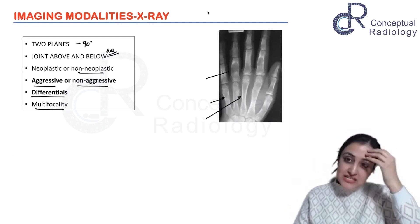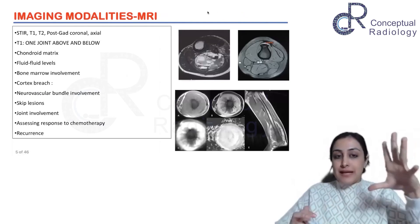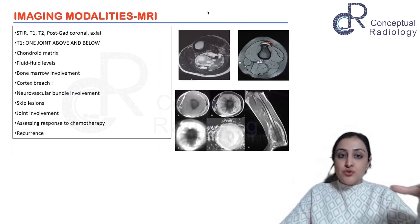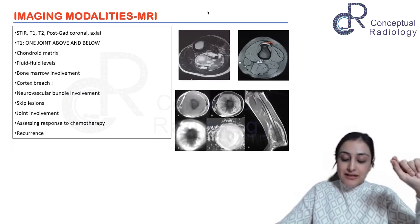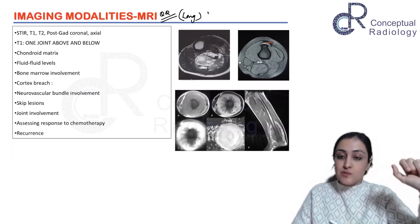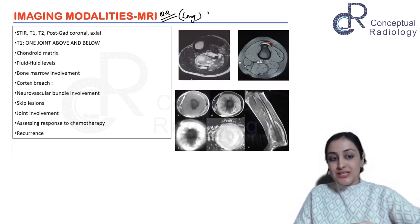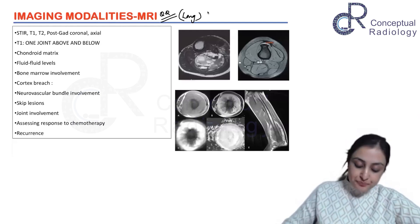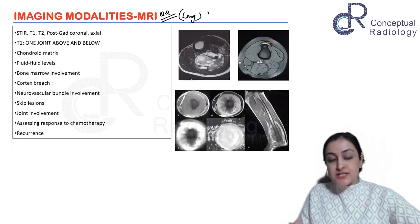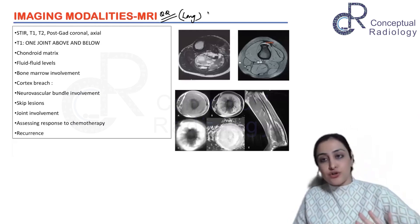MRI is the best investigation and is done in almost every aggressive lesion as a supplement. The role of MRI in bone tumors is a common long-answer theory question. The protocol usually includes contrast in all cases — T1, T2, post-gadolinium in two planes, most commonly coronal and axial. Post-gadolinium may be done in all planes.